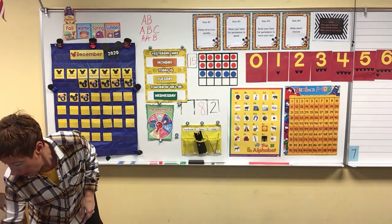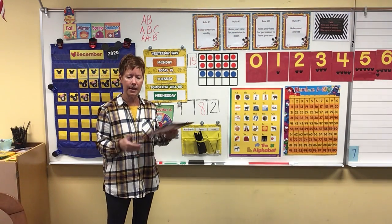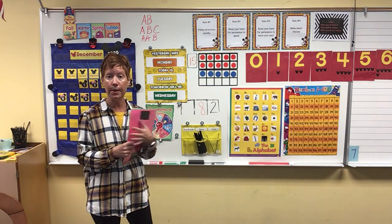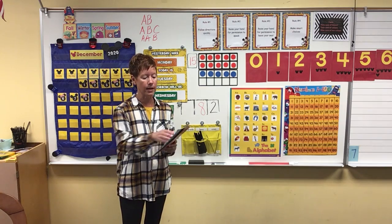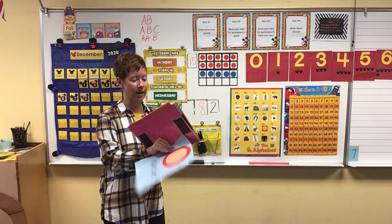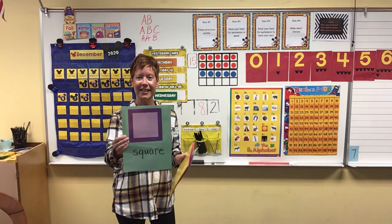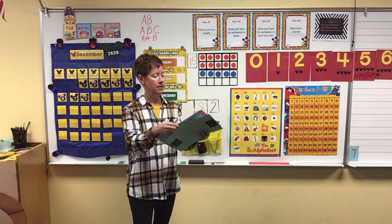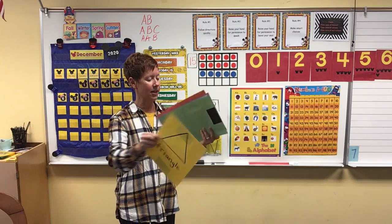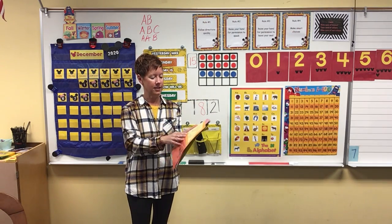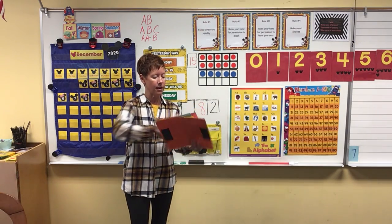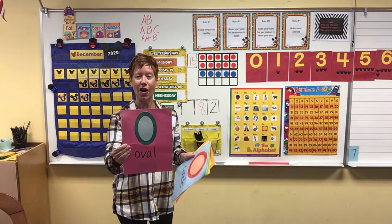Okay now I want us to go ahead. We haven't done this in a little while but I think it might be a good idea for us to review our shapes. So I'm gonna hold up a shape and you tell me what it is. What do I have? Circle. Very good. What about this one? Square. This one? Triangle. This one? Rectangle. And our last shape is an oval.